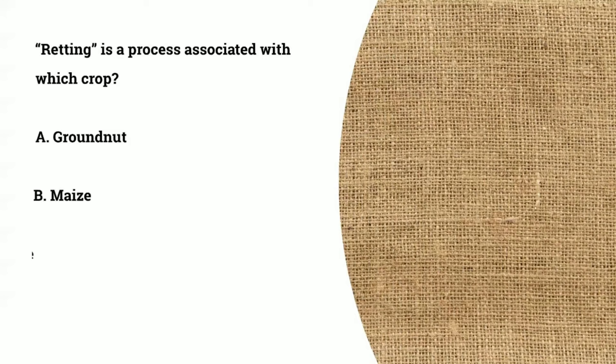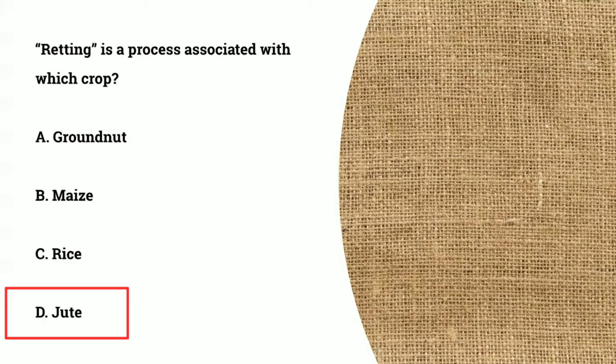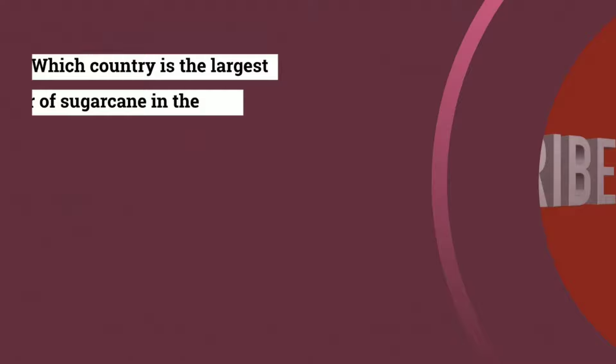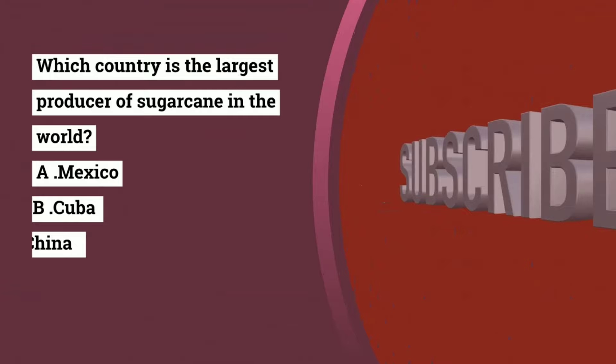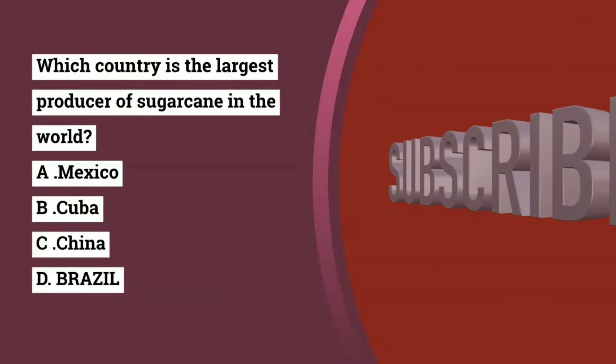The options for question 15 are groundnut, maize, rice, or jute. The correct answer is jute. Retting is the process to separate the fiber from the woody stem without damaging the fiber. Question number 16: which country is the largest producer of sugarcane in the world? The options are Mexico, Cuba, China, or Brazil. The correct answer is Brazil.